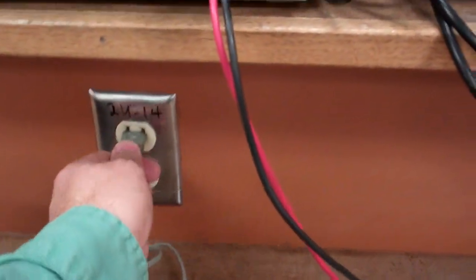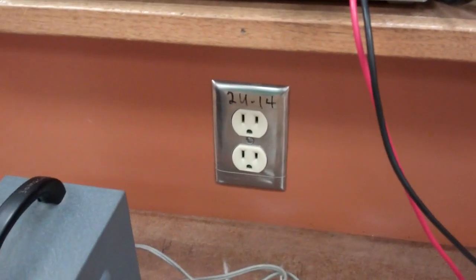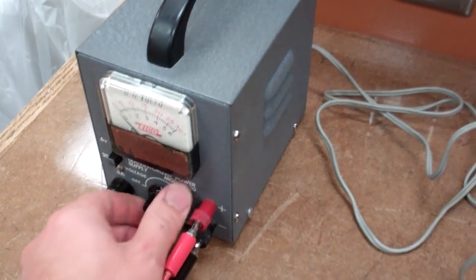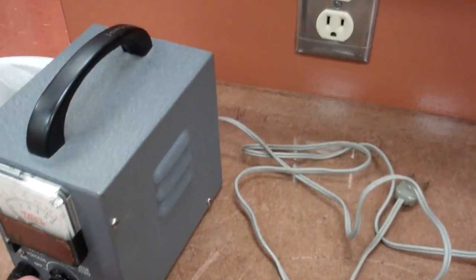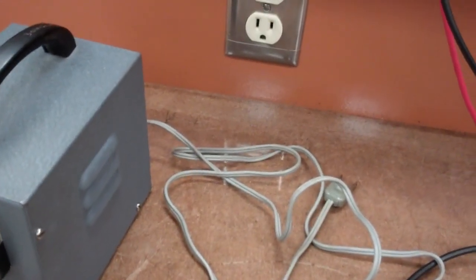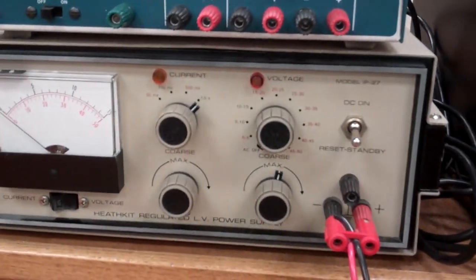What you're going to do at that point, just go ahead and unplug this. Turn this all the way off. And everything with this power supply is now done. You can go ahead and remove it. Then we're going to do the next one, which will probably be the IP27, which is this one right here.